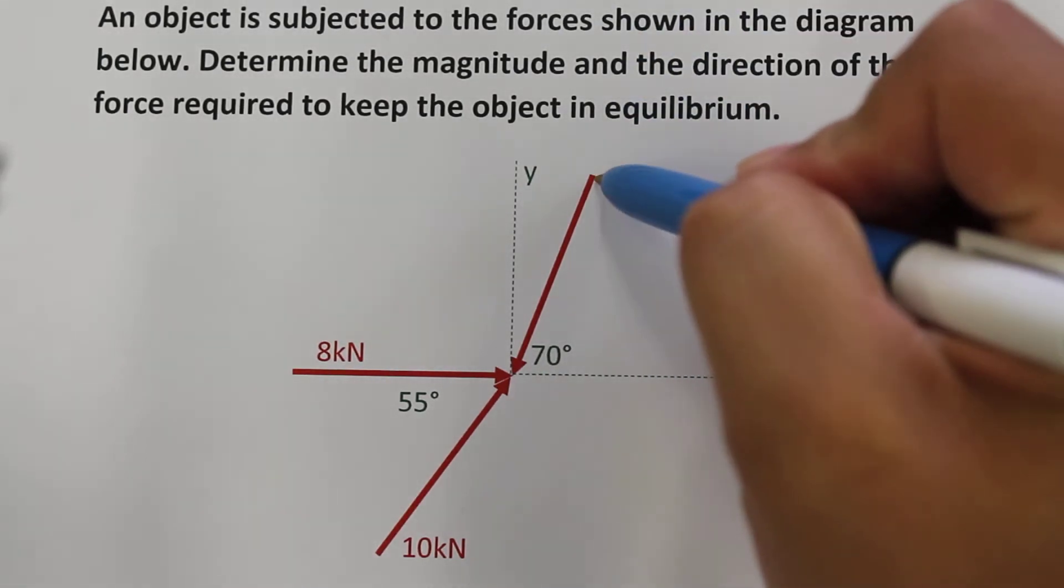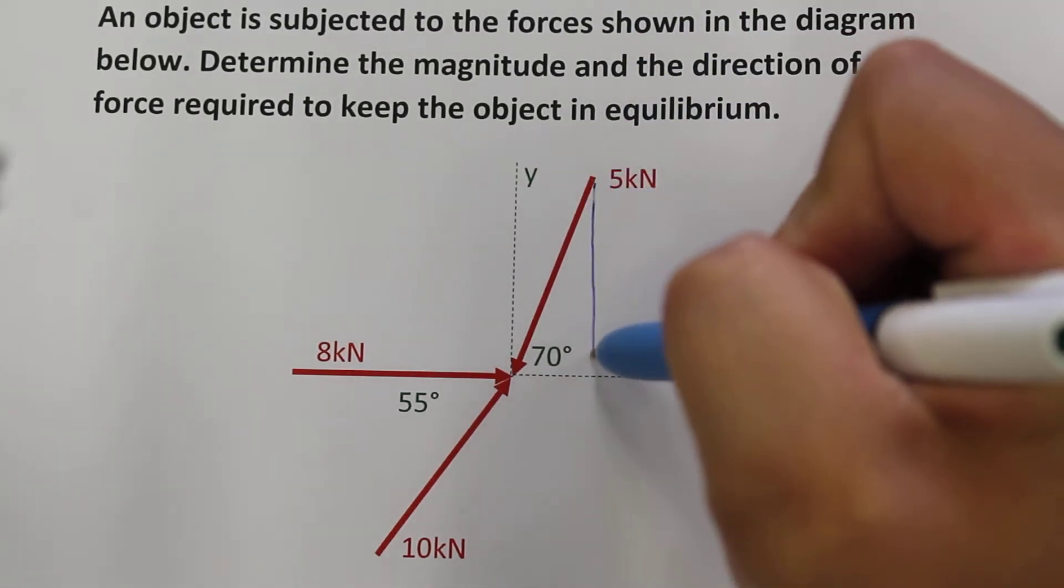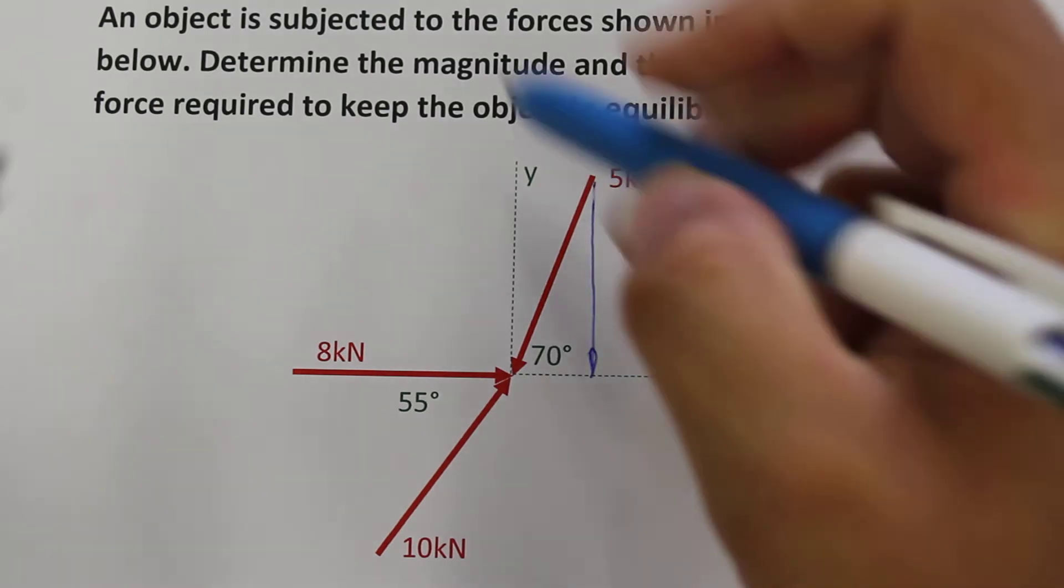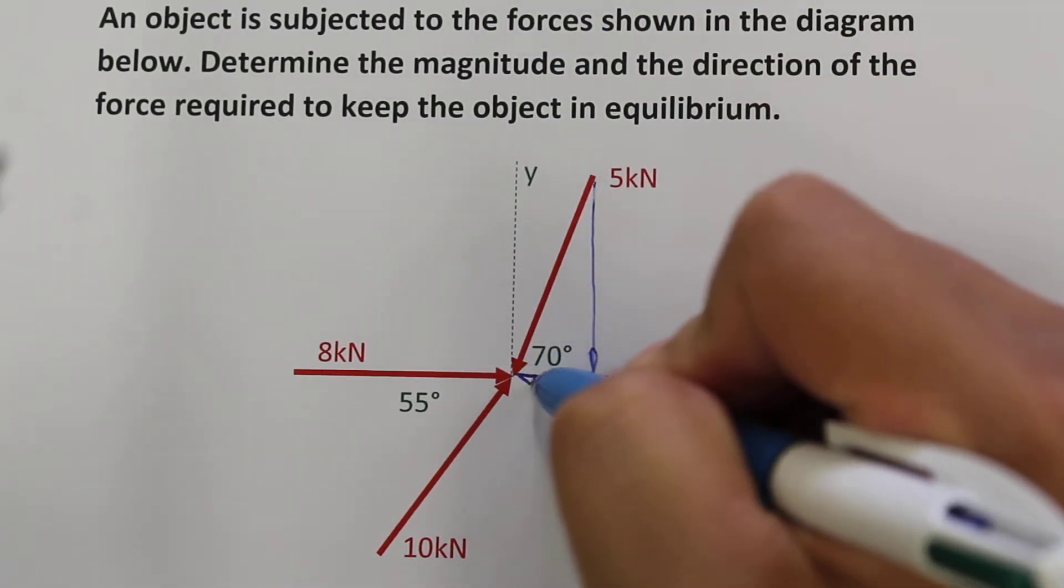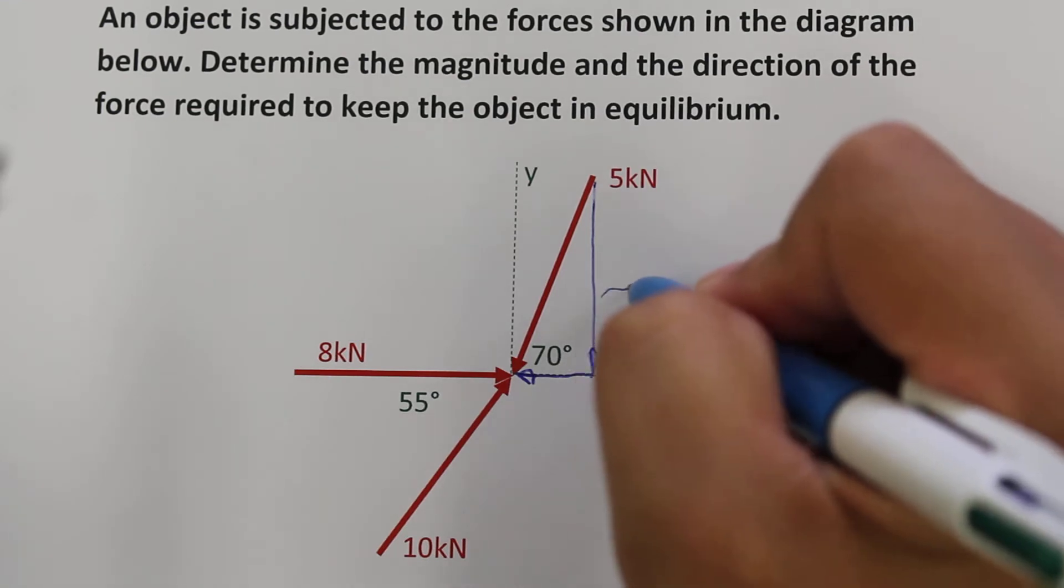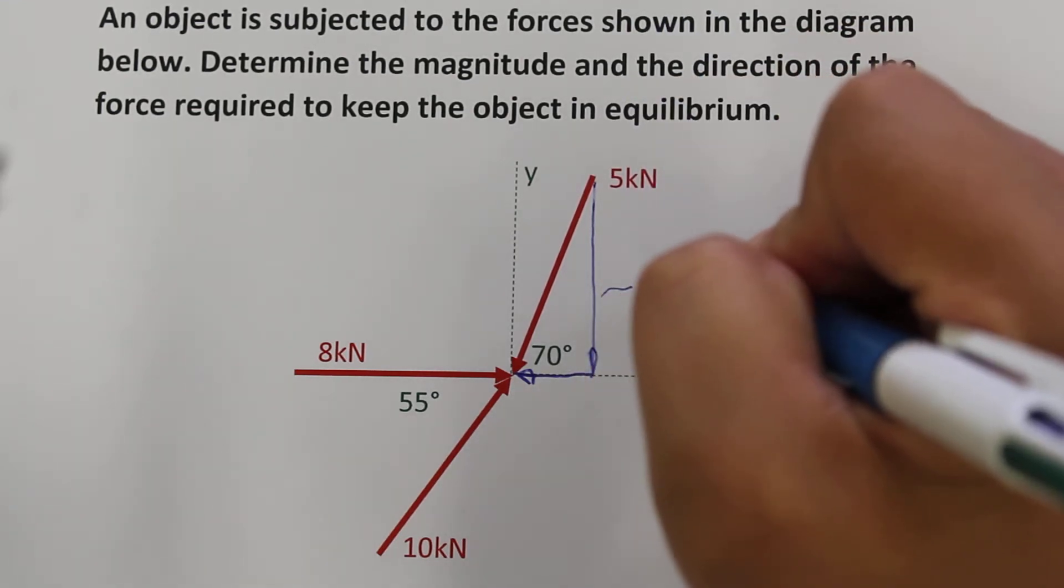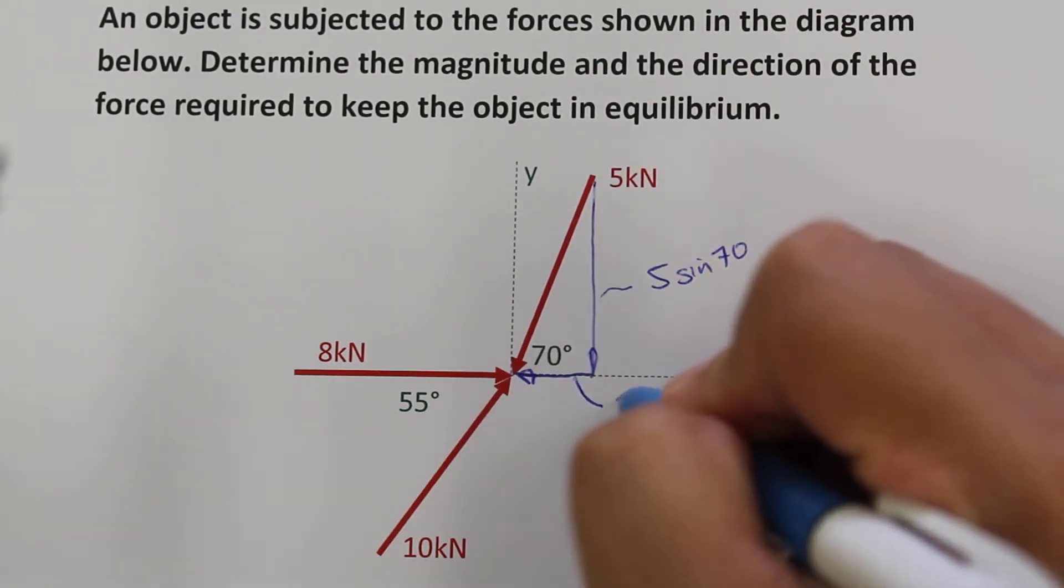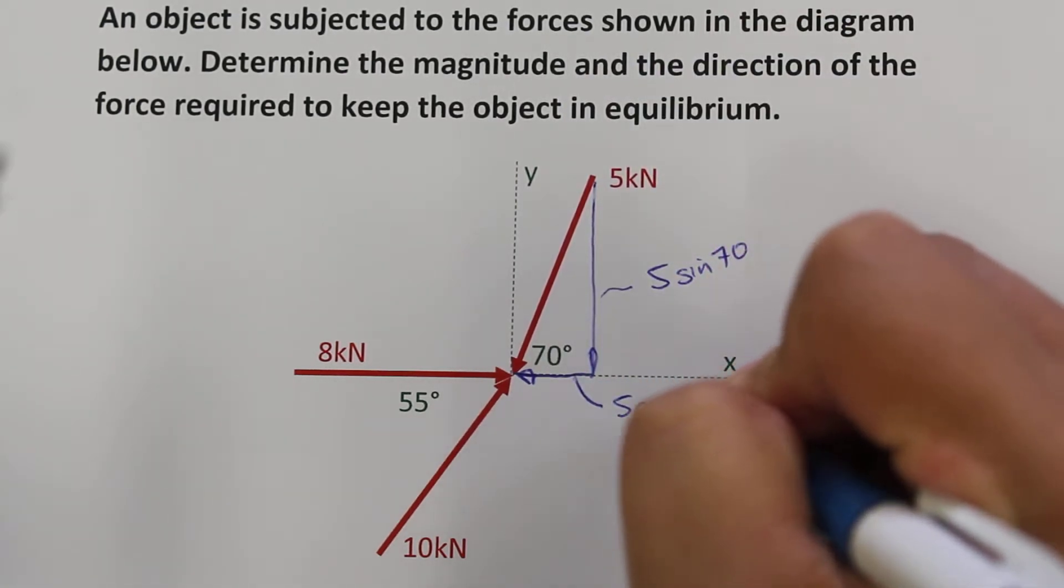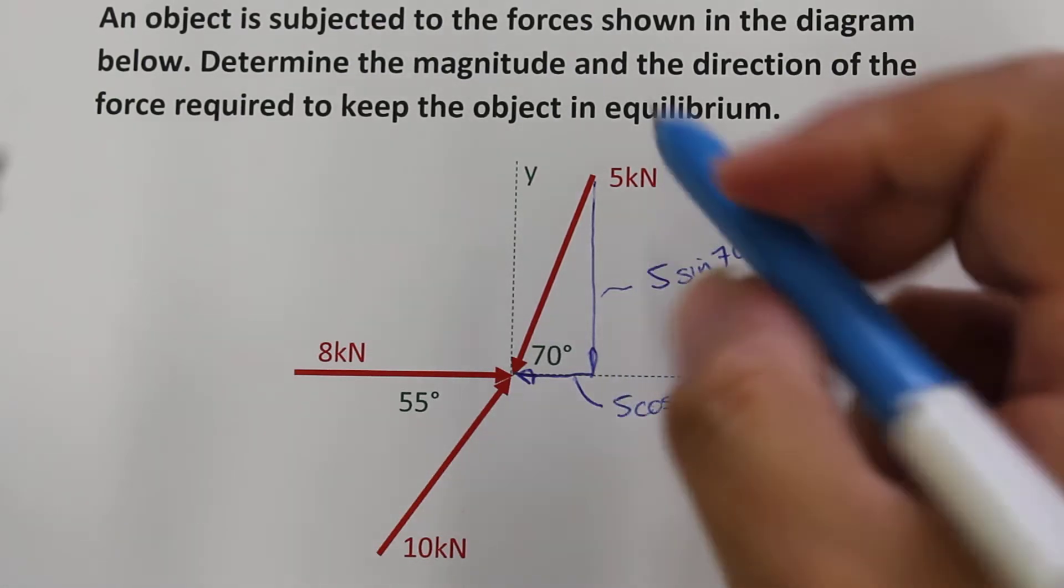So this 5kN force has a component going downwards and a component going towards the left. This component here will be 5 sin 70 and this component will be 5 cos 70 going towards the left.